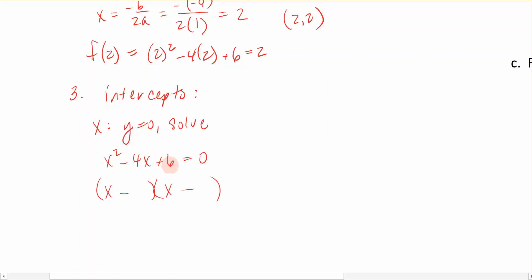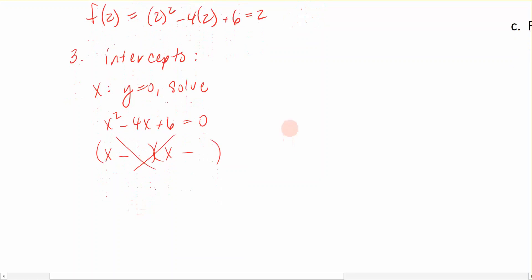The next set of factors of 6 are just 2 and 3, and they do not add to give me 4 either. So this function doesn't factor. The next thing, that doesn't mean that there aren't roots. That just means that this function doesn't factor. So the next thing you want to consider is the quadratic formula or just the discriminant from the quadratic formula.